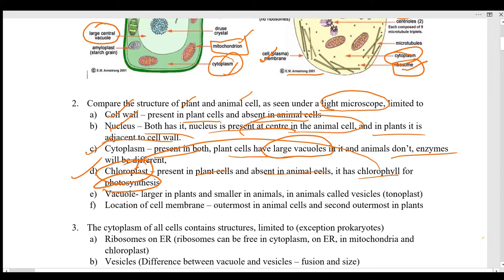Plant cells have a larger vacuole whereas animal cells have smaller ones called vesicles. An extra piece of information: the membrane of the vacuole is generally called the tonoplast.